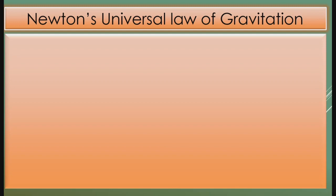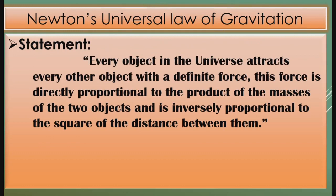Newton's universal law of gravitation states that every object in the universe attracts every other object with a definite force. This force is directly proportional to the product of the masses of the two objects, and is inversely proportional to the square of the distance between them.